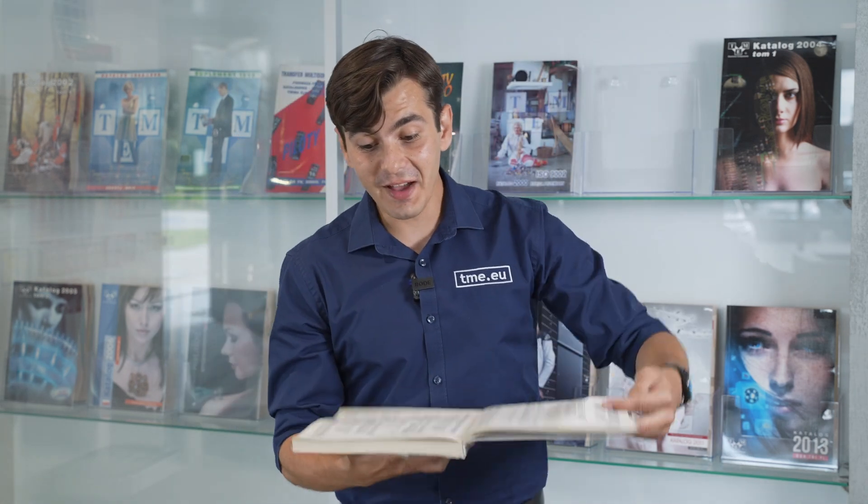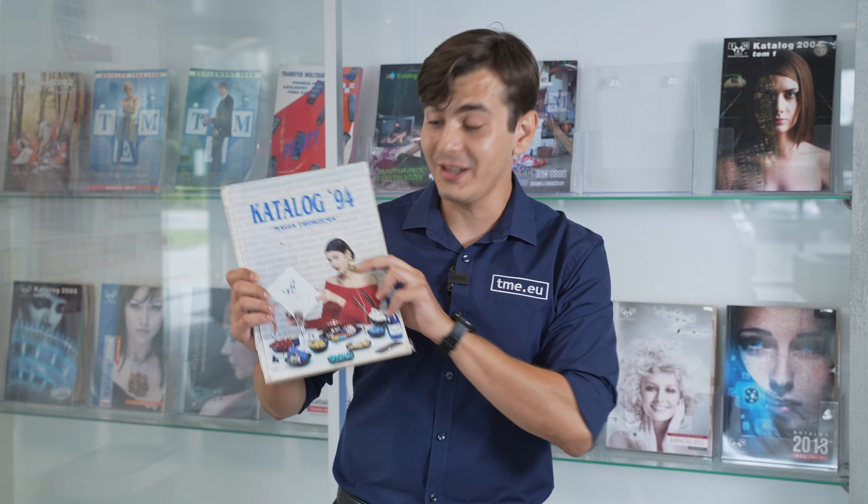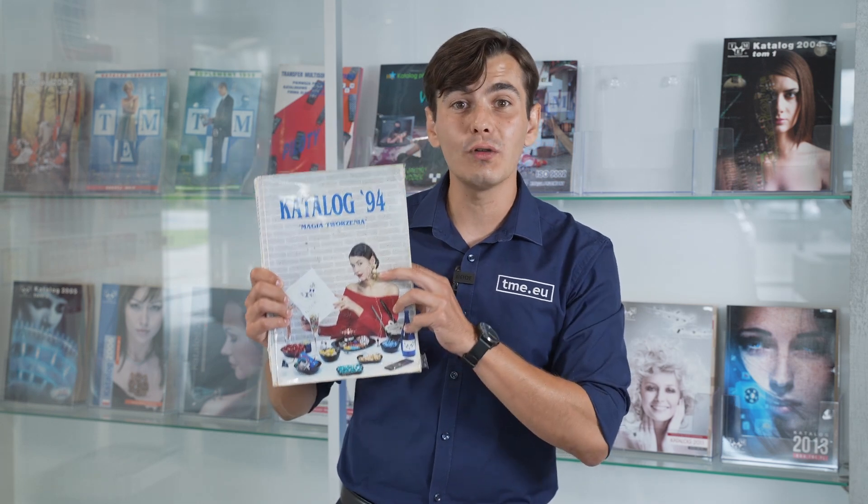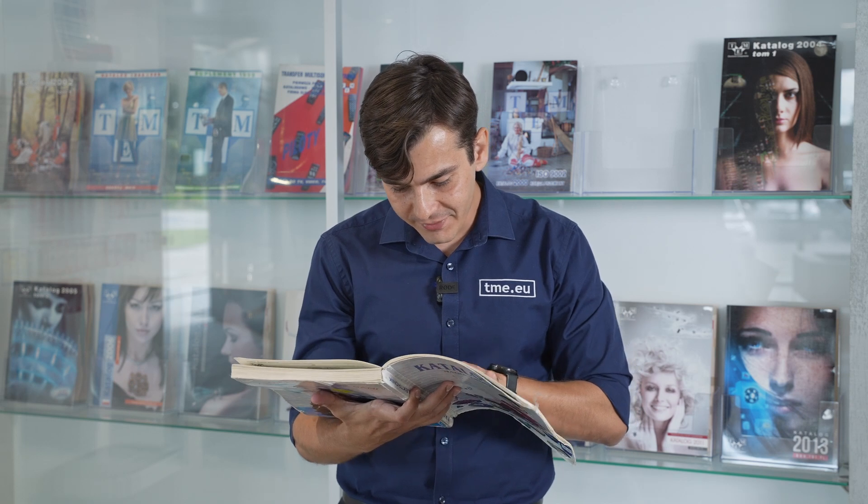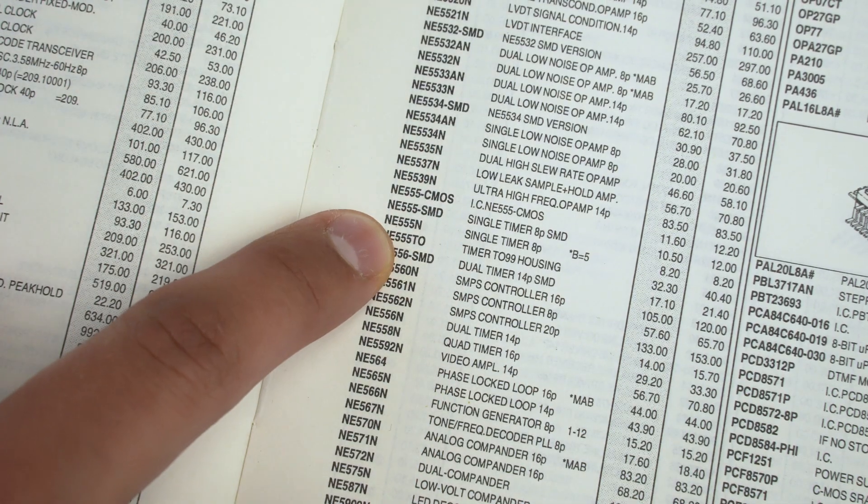There are only a few things in this world that survived the test of time. Those are Civilization II, Tom Cruise, and the 555 timer, which can also be found in our oldest catalog from 1994, page 31 NE555N. And that's what we are going to talk about in this episode.